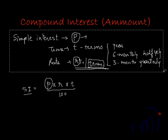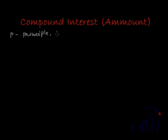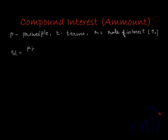Now let's find the formula to calculate compound interest. We have P which is principal, T which is the number of terms, and R which is the rate of interest in percent. The formula for simple interest is P×R×T/100. We also introduce A, called the amount, which is the amount payable at the end of a term.